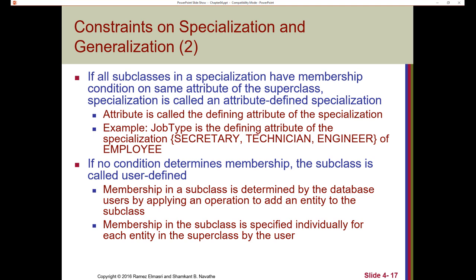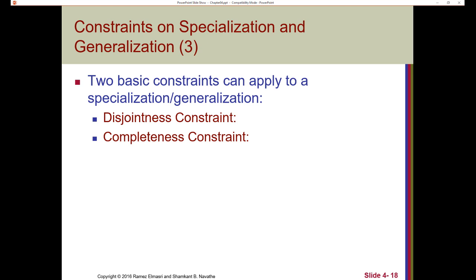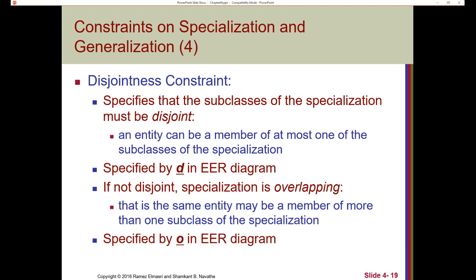There are two basic constraints that can apply to specialization or generalization: disjointness and completeness. The disjointness constraint specifies that the subclasses of the specialization must be disjoint. In other words, if you have an entity that's a secretary, they cannot also be a technician or an engineer — they can only fall into that specific subclass. An entity can be a member of at most one of the subclasses of the specialization, and we designate this by showing a D in the circle in the diagram.